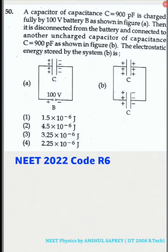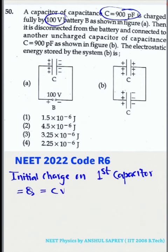The question has given a capacitor of capacitance 900 pF connected across 100V battery. So, the initial charge on that capacitor is Q, that is equal to C into V, is equal to 9 into 10 raised to minus 8 Coulomb.